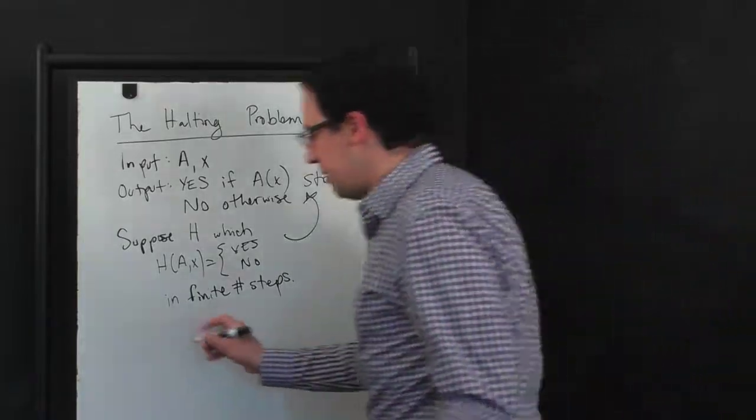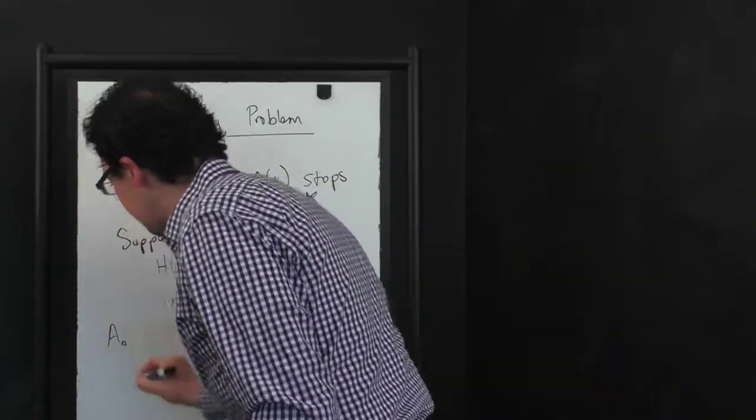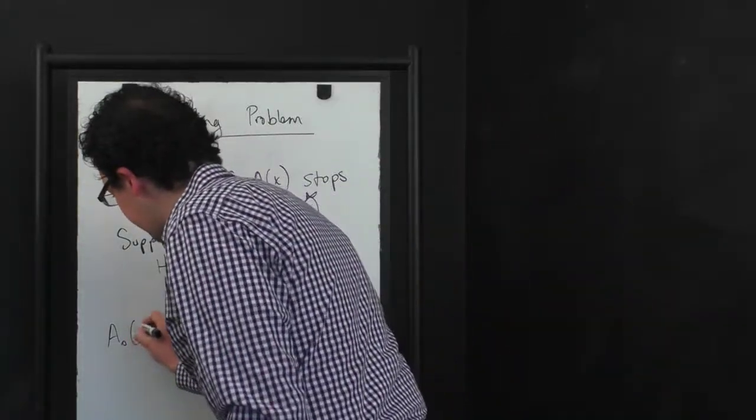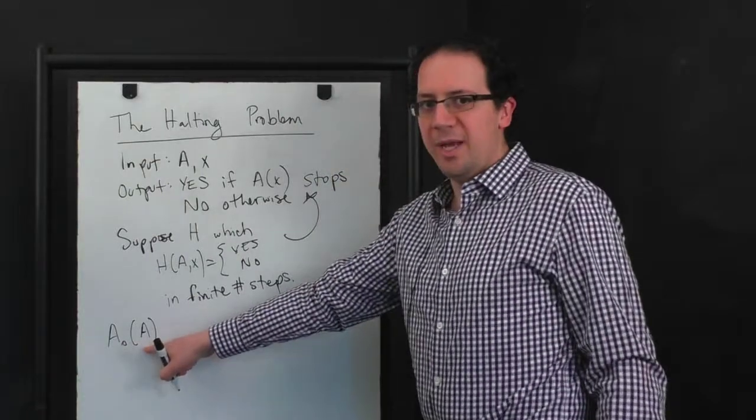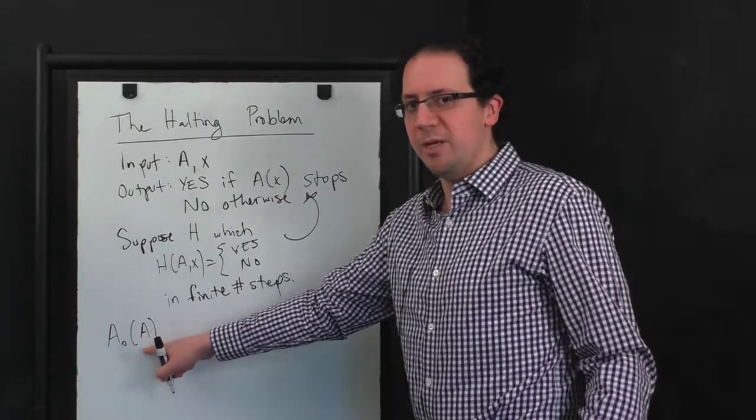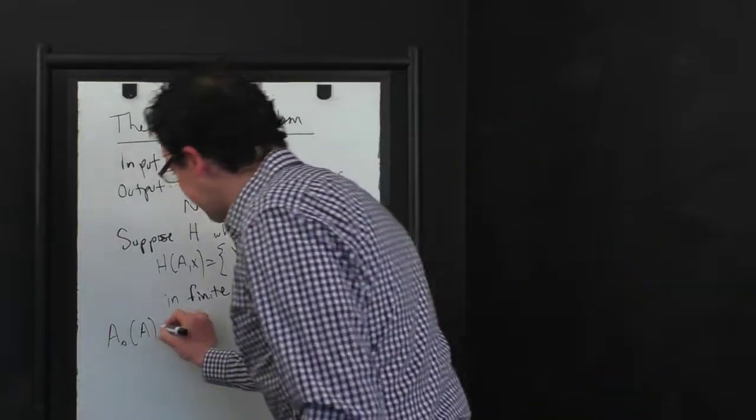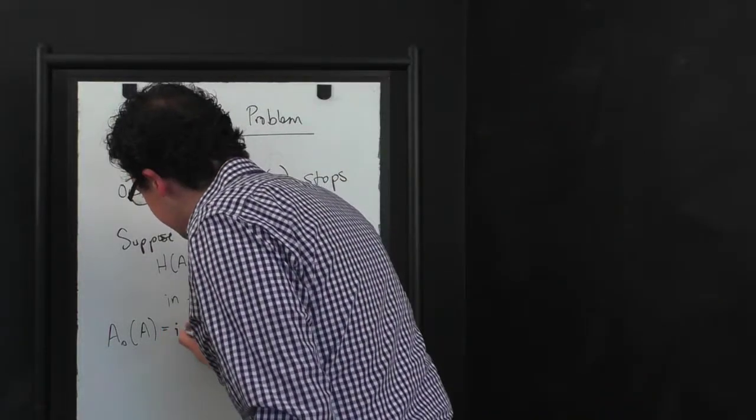All right. We're going to build an algorithm A0, where H gets it wrong whether A0 halts. So A0 is going to take as input an algorithm A, again by which we mean the description of an algorithm in some formal programming language. And A0 works as follows.